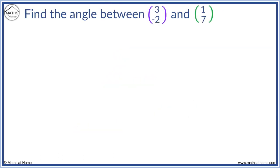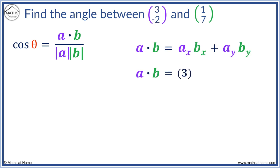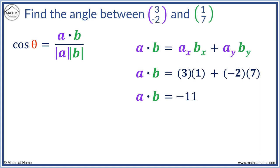For example, find the angle between (3, -2) and (1, 7). We use our formula. First we need a dot b, which equals ax times bx plus ay times by. ax is 3, bx is 1, ay is minus 2, and by is 7. Three times one equals three, and minus two times seven equals minus fourteen. Three take away fourteen equals minus eleven.